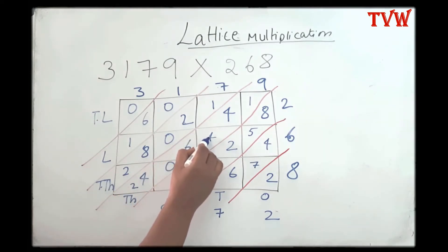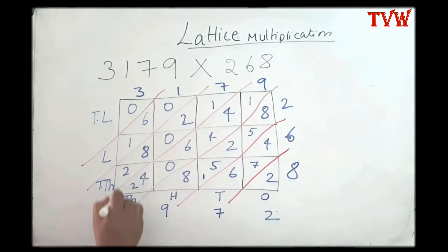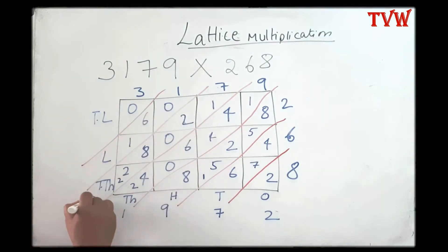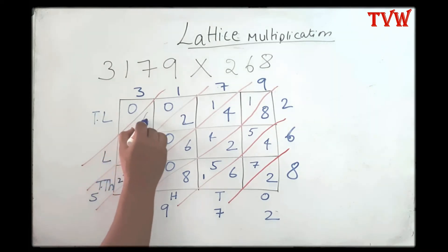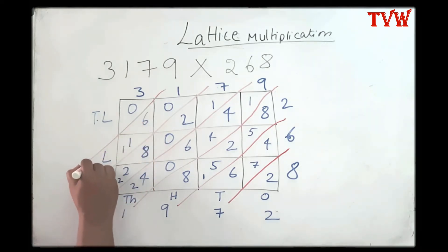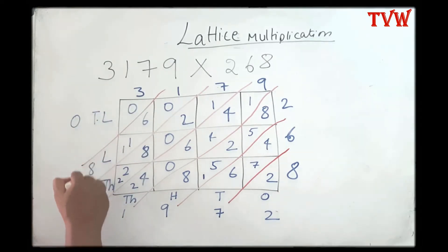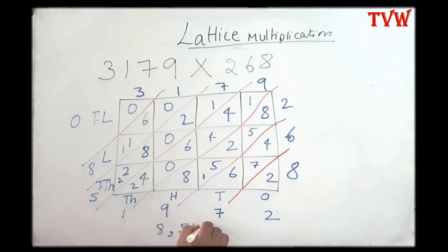Two plus four is six, six plus six is twelve, twelve plus four is sixteen, sixteen plus four is twenty, twenty plus one is twenty-one. In the ten thousands place: two plus two is four, four plus eight is twelve, twelve plus two is fourteen, fourteen plus one is fifteen — so five here and one goes to the one lakhs place. One plus one is two, two plus six is eight. In the ten lakhs place I have zero, so I can read from here: eight lakhs fifty-one thousand nine hundred and seventy-two. That is our answer.